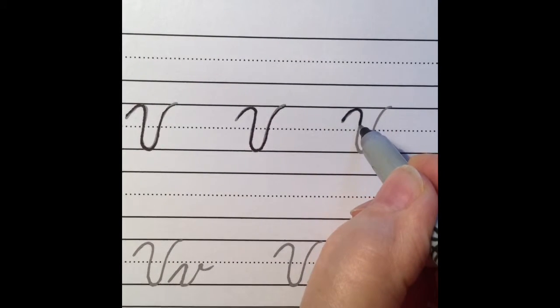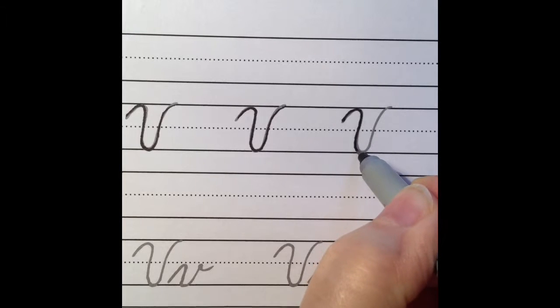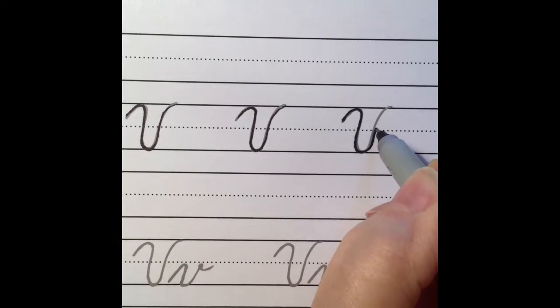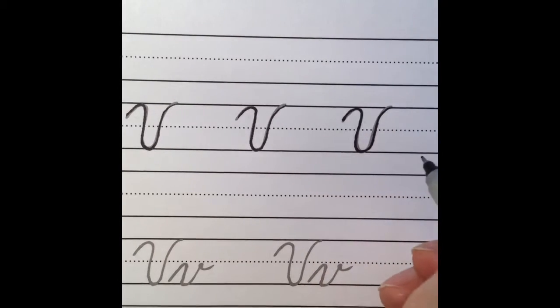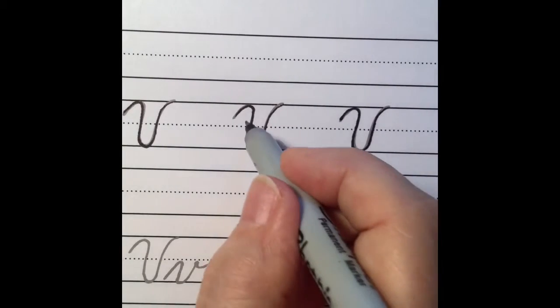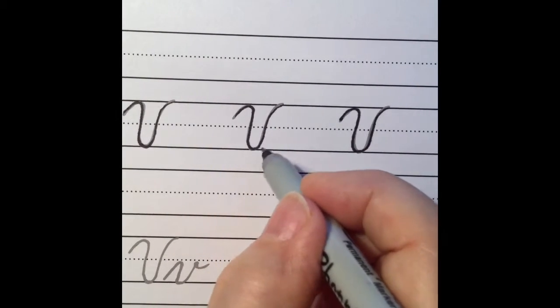So between the midline and the headline over curve, down to the under curve, back up almost straight, and then curves at the ending. Don't put extra curves into your V.